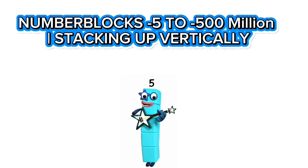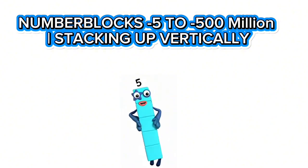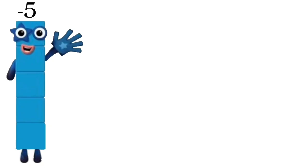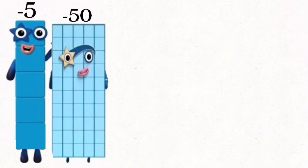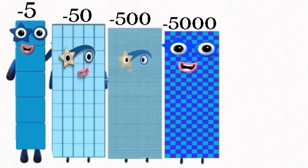Number blocks, negative 5 to negative 500 million, stacking up vertically. Negative 5. Negative 50. Negative 500. Negative 5,000.